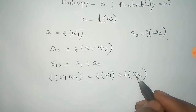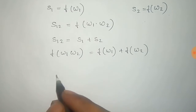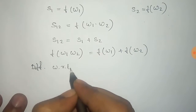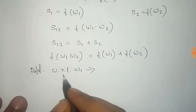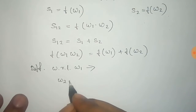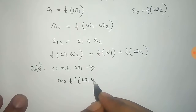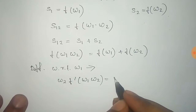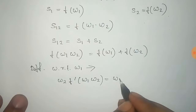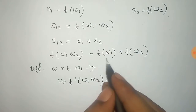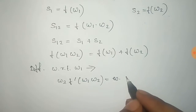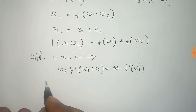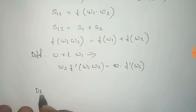We differentiate both sides of this equation with respect to Omega1. On the left hand side, Omega2 is constant so it comes out, giving Omega2 · f'(Omega1 · Omega2). On the right hand side, f(Omega2) gives zero, leaving only f'(Omega1), where f' means df/dOmega1.